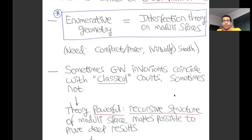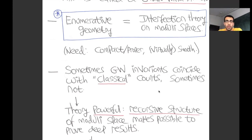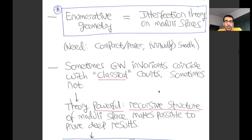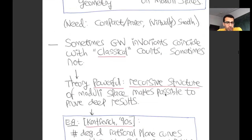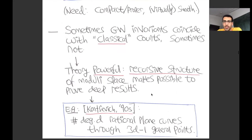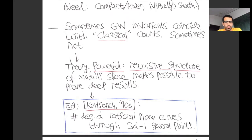Sometimes these Gromov-Witten invariants will coincide with the classical counts: some stable maps really do look like embedded curves, as the normalization of some embedded curve. In nice situations, these numbers really do give the classical counts—but in other cases they don't. Even when they don't agree, it's very interesting and actually very powerful to relate the two: you can prove classical results using this machinery that you weren't able to prove before. There's a recursive structure of the moduli space which makes it possible to prove deep results. For example, Kontsevich in the 90s gave a complete recursive formula in all degrees for counting rational plane curves of degree D through 3D−1 general points.